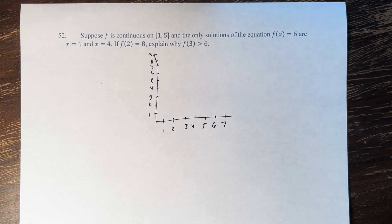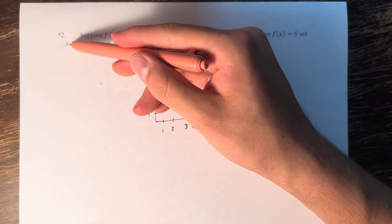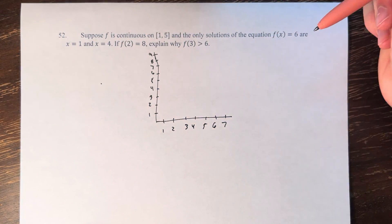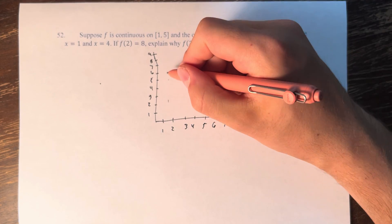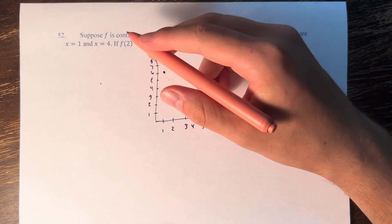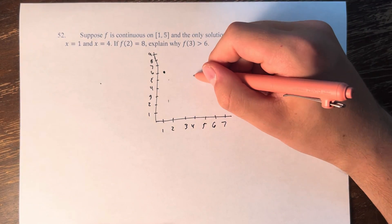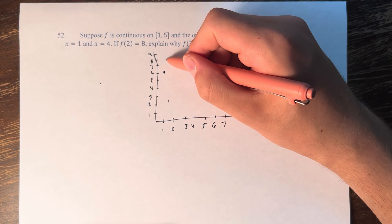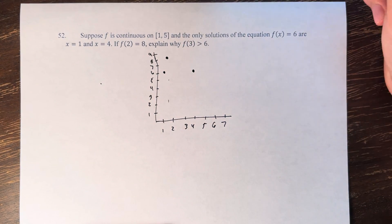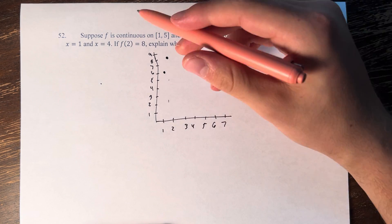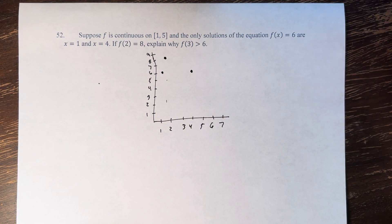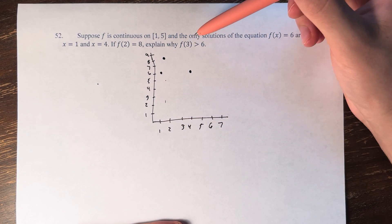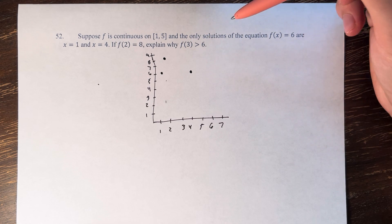So we're continuous on this range. And f of x equals 6 if x is equal to 1 and x is equal to 4. So if x equals 1, the function is equal to 6; if x equals 4, f is equal to 6. And f of 2 is equal to 8. This function is continuous, and we're asked to explain why f of 3 is greater than 6.